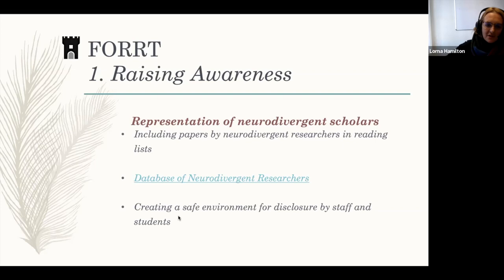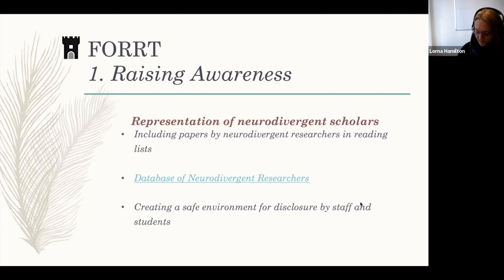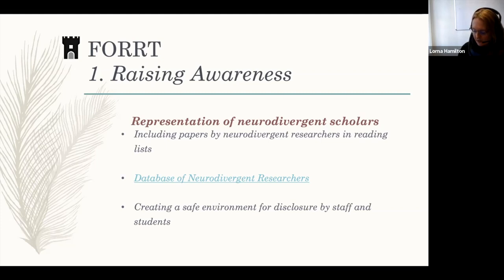By now, I think everyone is probably aware that representation in education really matters. It's really important for our students that they see themselves represented in the curricula they study. We know that many neurodivergent scientists and academics don't disclose their diagnosis, partly because neurodivergent conditions — including autism, ADHD and dyslexia — are often highly stigmatized, perhaps especially within academic contexts. But our neurodivergent students need role models to aspire to, and that's why the activism of autistic and other neurodivergent scholars in recent years has been so important and inspiring.